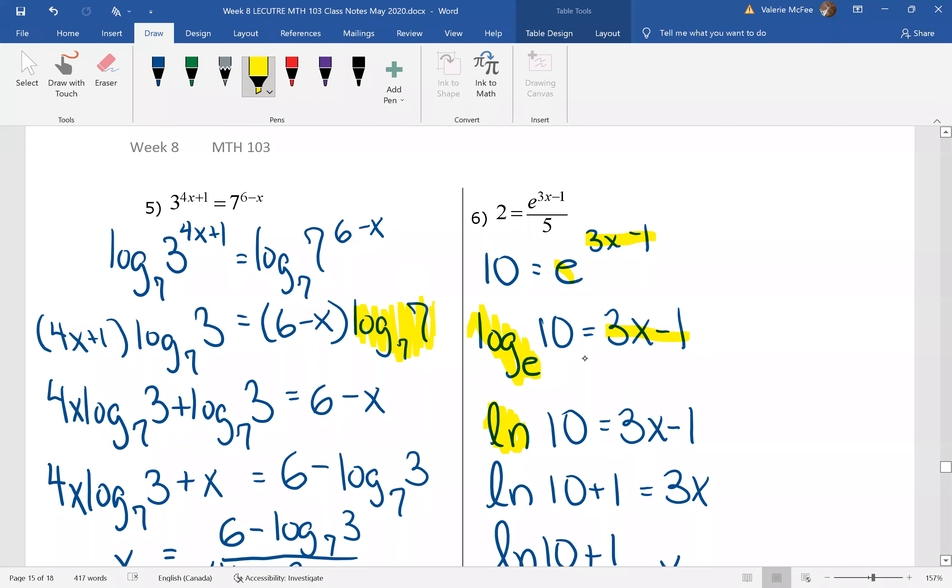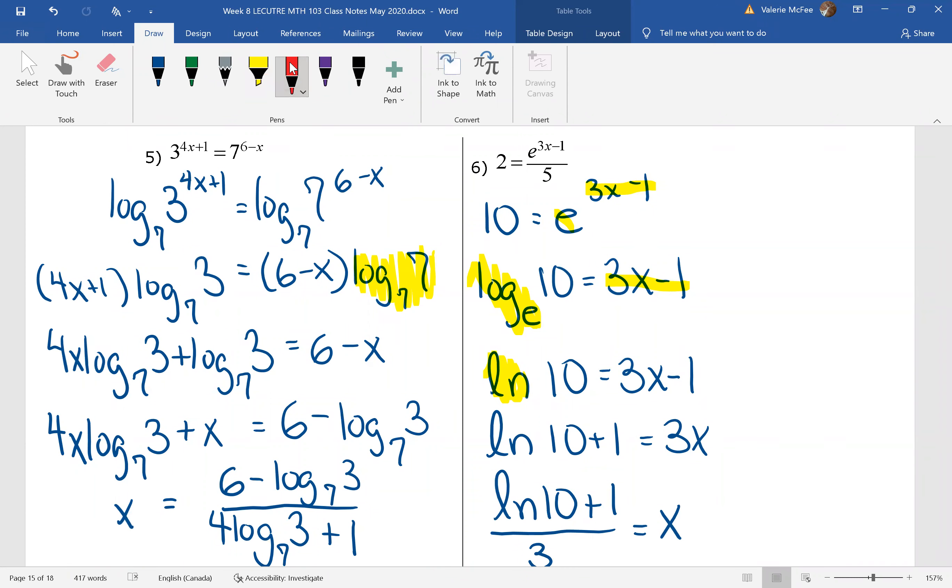We added one to both sides. And this cannot be simplified because even though we don't write brackets, we know we have to evaluate the natural log of 10 and then add one. And finally, we divided both sides by three. This is the exact answer.